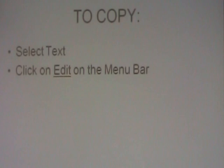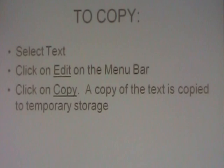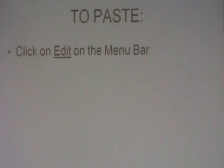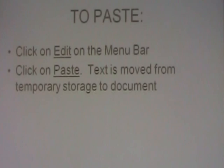To copy, you do much the same thing. You're going to again select text — this is extremely important. Nothing will happen unless you do the selecting of the text. Then again, you click on Edit on the menu bar, and this time you will click on Copy. A copy of the text is copied to temporary storage. Then you move the cursor to the place in the text where that copy is to appear, and then it's time to paste. Again, you go to the menu bar and click on Edit, and this time you will click on Paste. And text is moved from temporary storage to the document.